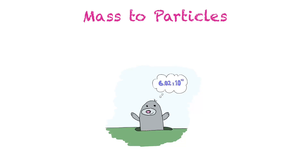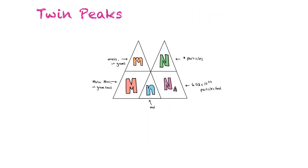In this video, we're going to determine how to go from mass and determine the number of particles found in that mass. The tool we'll use to help keep track of going from mass to number of particles, or particles to mass, is a tool I like to call twin peaks.